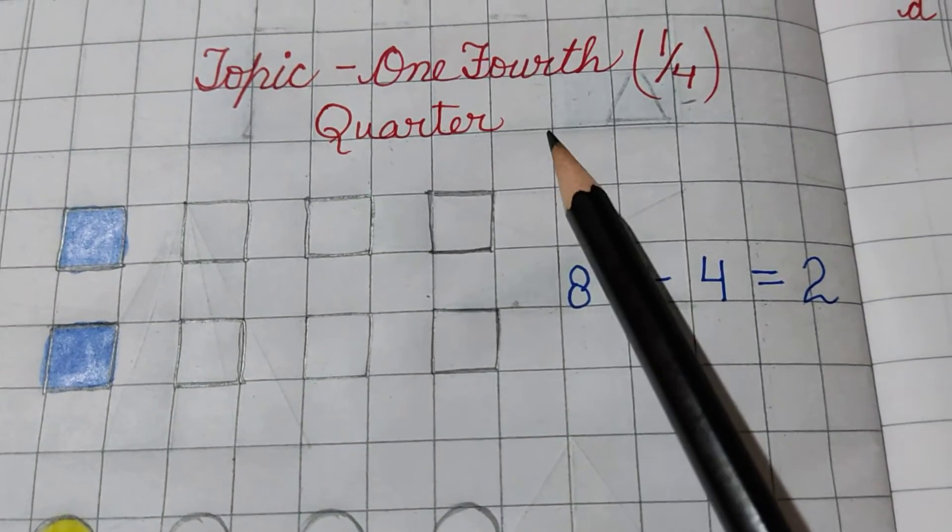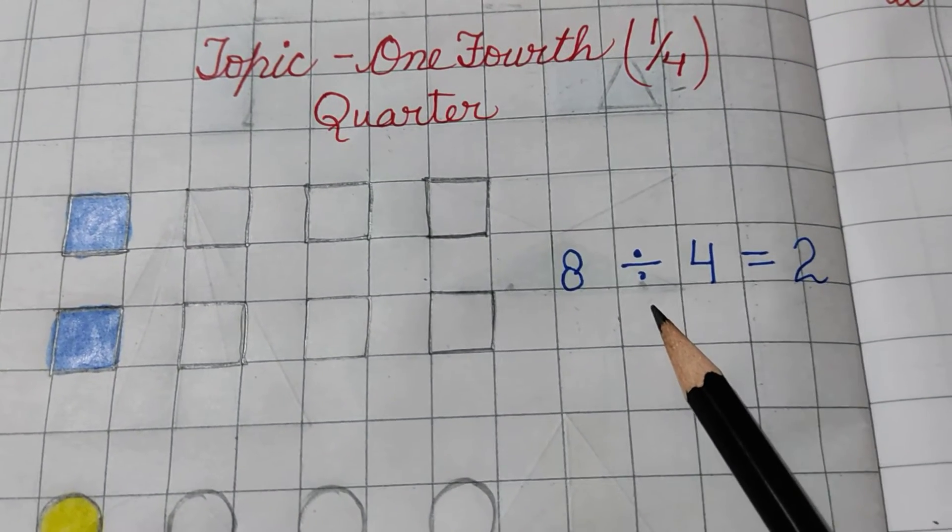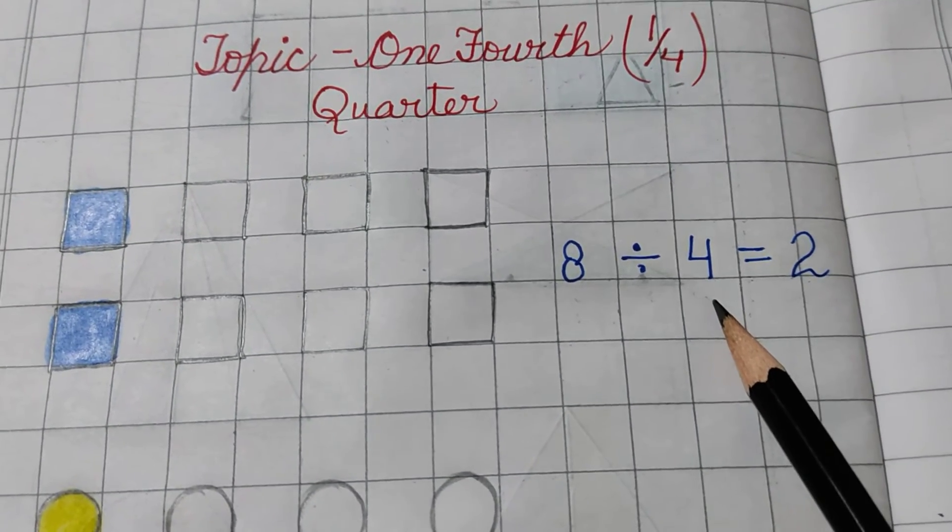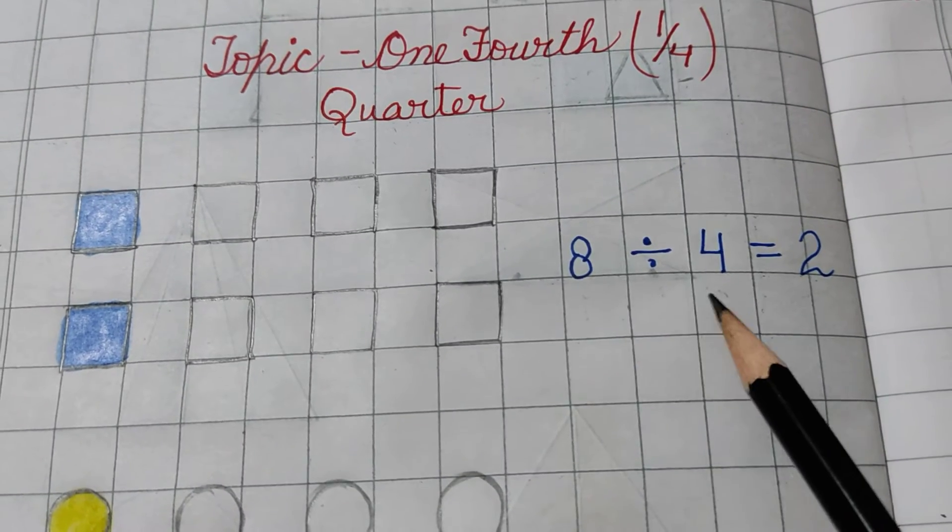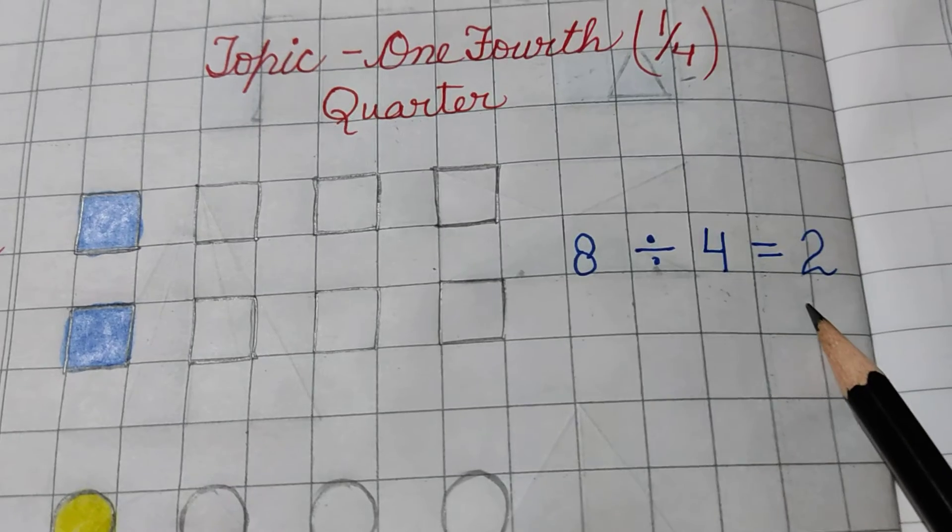As we are doing one-fourth, so we have to divide it by 4. So, I have put the sign of division here, then divide by 4 to get 8, we have to read the table of 4. 4, 2 is the 8. 2 is the answer.